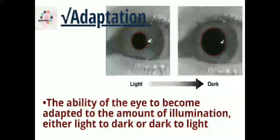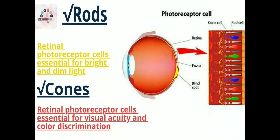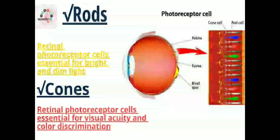Next is adaptation — the ability of the eye to become adapted to the amount of illumination, either from light to dark or dark to light, as you can see in the picture. For example, when we are going out in the mid-afternoon or when we are going into a theater hall.